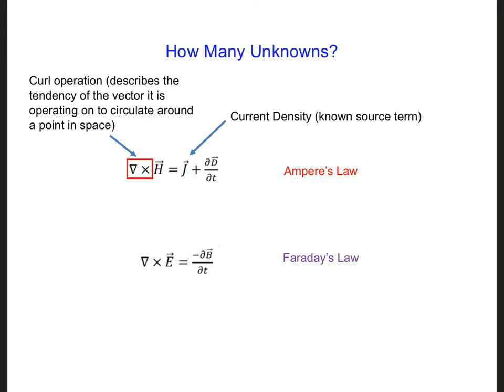At first, it may appear that there are four unknowns: H, D, E, and B, while we only have two equations—Ampere's and Faraday's Law—to solve for these four unknowns.